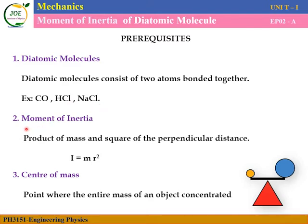The second pre-requisite is moment of inertia. From the previous video, moment of inertia is nothing but the product of mass and the square of perpendicular distance: I equals M into R squared.